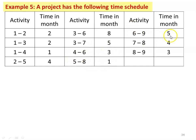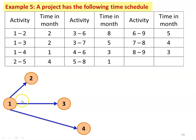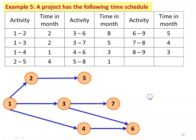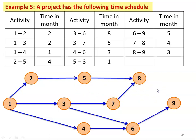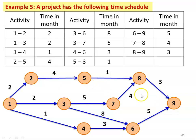Continuing: activity 5 to 8 is 1 month, 6 to 9 is 5 months, 7 to 8 is 4 months, and 8 to 9 is 3 months. We have to calculate the critical path of the network. The network is drawn with the activities and their times shown above the arrows. We have to calculate the earliest expected time, latest completion time, the slack of every event, and find the critical path.